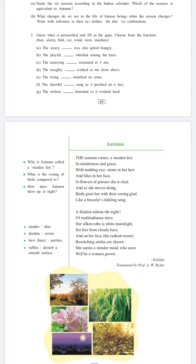Some word meanings: slender, diadem - crown, king, queen crown, bars - which means patches, ruffles - which means a smooth surface, disturb and bring.